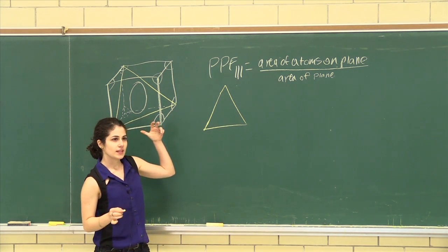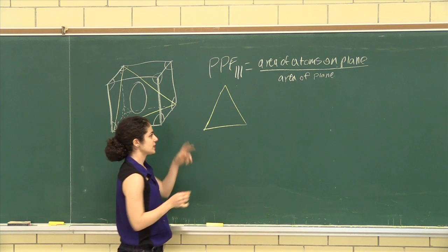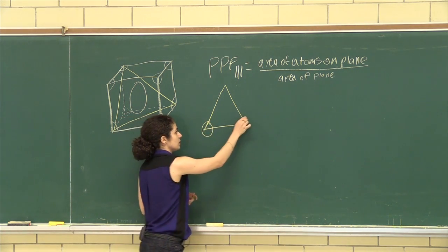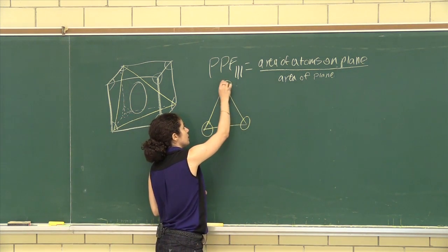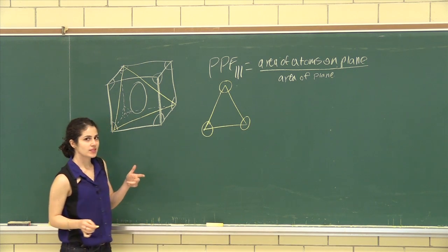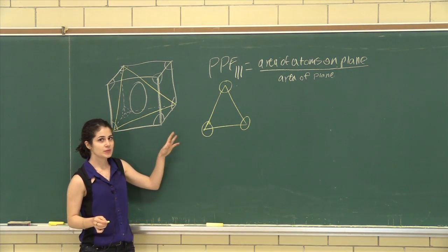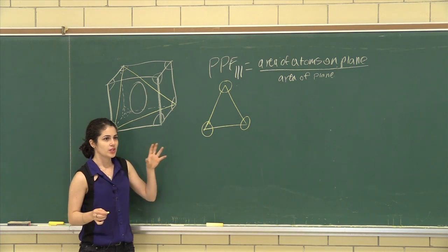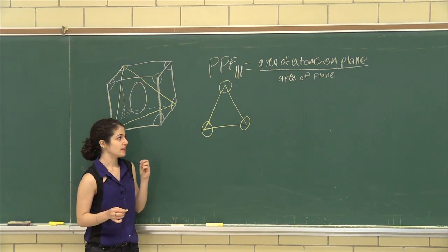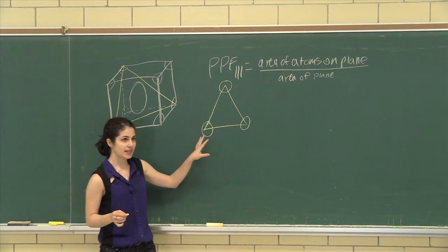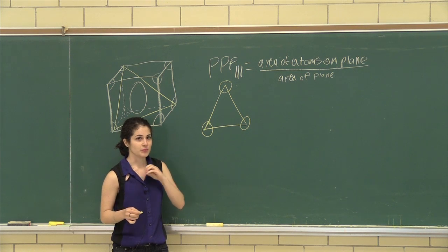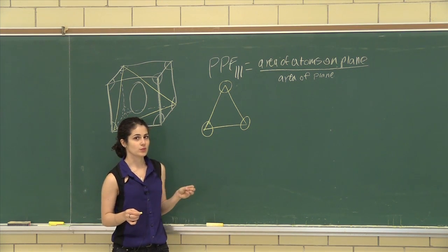And a sixth of an atom fits in each corner over here. But what about the center? So when you're calculating planar packing factor, you have to know that whatever lies on the plane, the center of the atom must be on the plane for it to count towards the density.